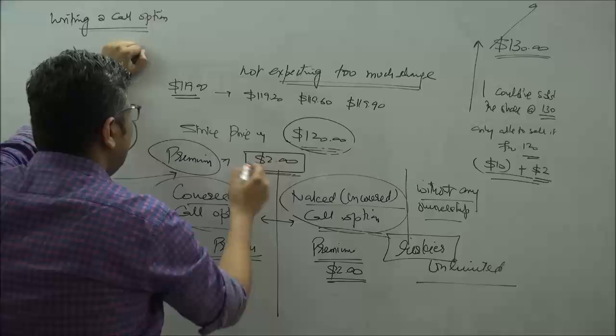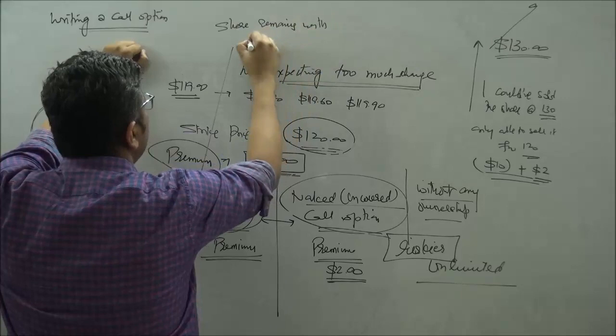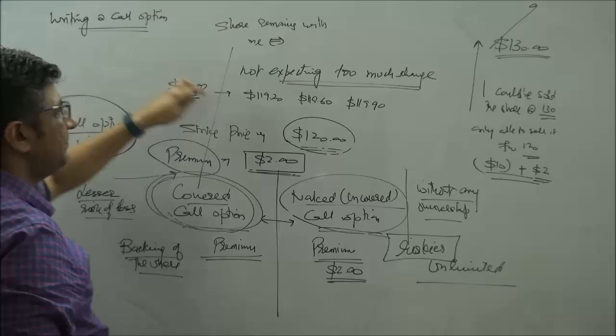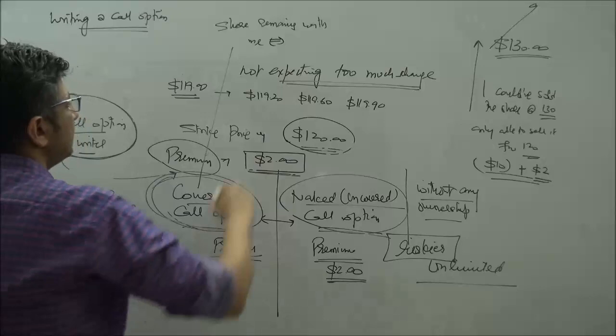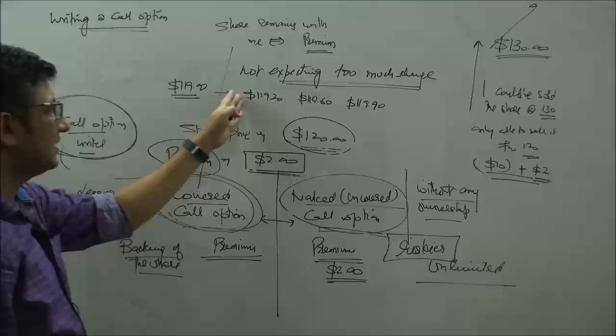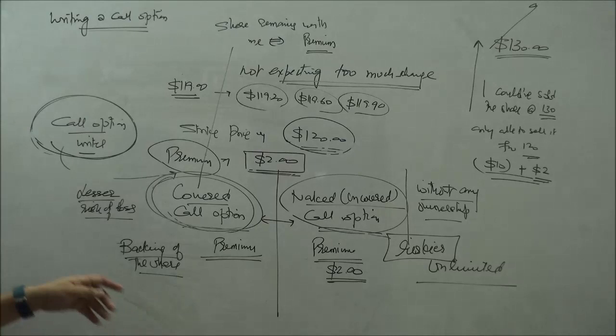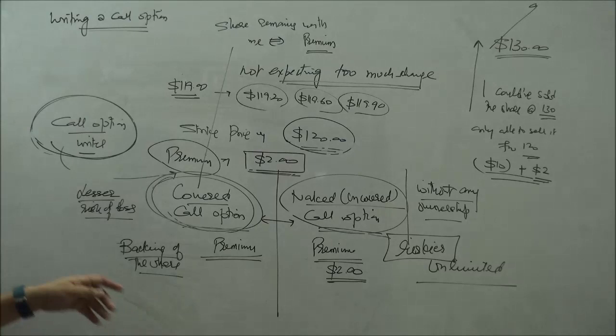So practically what is happening is, I keep on holding the share under the covered call option. The share remains with me. And while the share remains with me, there is no movement in the share price, there is no considerable volatility in the share price. I keep on earning my premium for each such option. Of course, the similar thought process can apply here, even though I do not have the share, but because the volatility is fairly, fairly at a lower pace, there is practically little volatility, so the premium comes to me here as well.